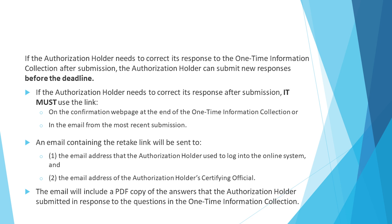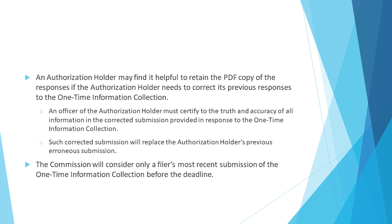If the authorization holder needs to correct its response to the one-time information collection after submission, it can submit new responses before the deadline. It must use the link on the confirmation web page at the end of the collection or in the email from the most recent submission. An email containing the retake link will be sent to the email address used to log in and to the certifying official's email address. The email will include a PDF copy of the submitted answers, which the authorization holder may find helpful to retain if it needs to correct previous responses.